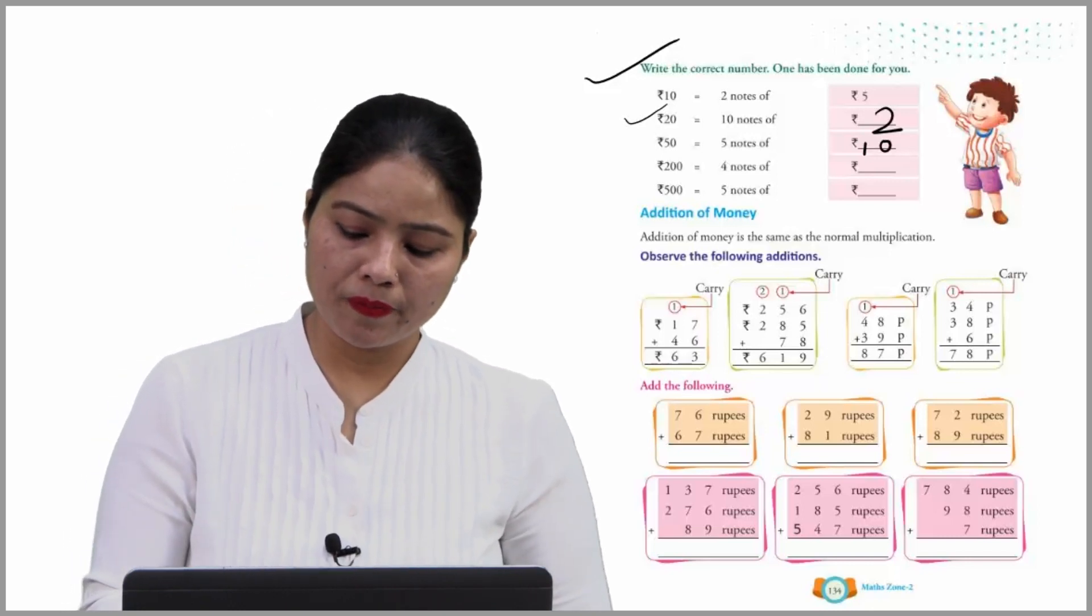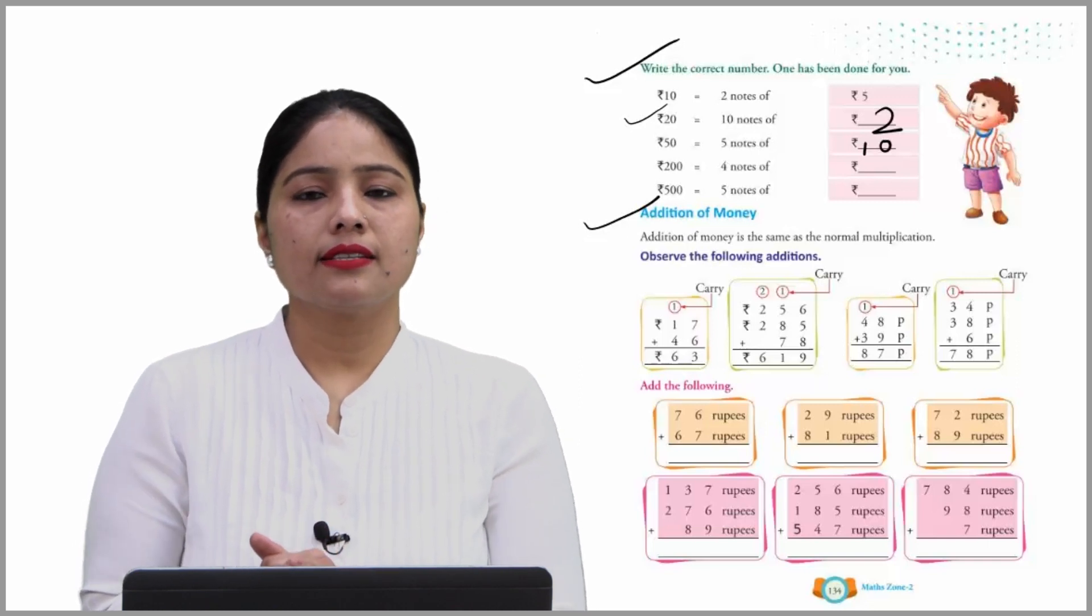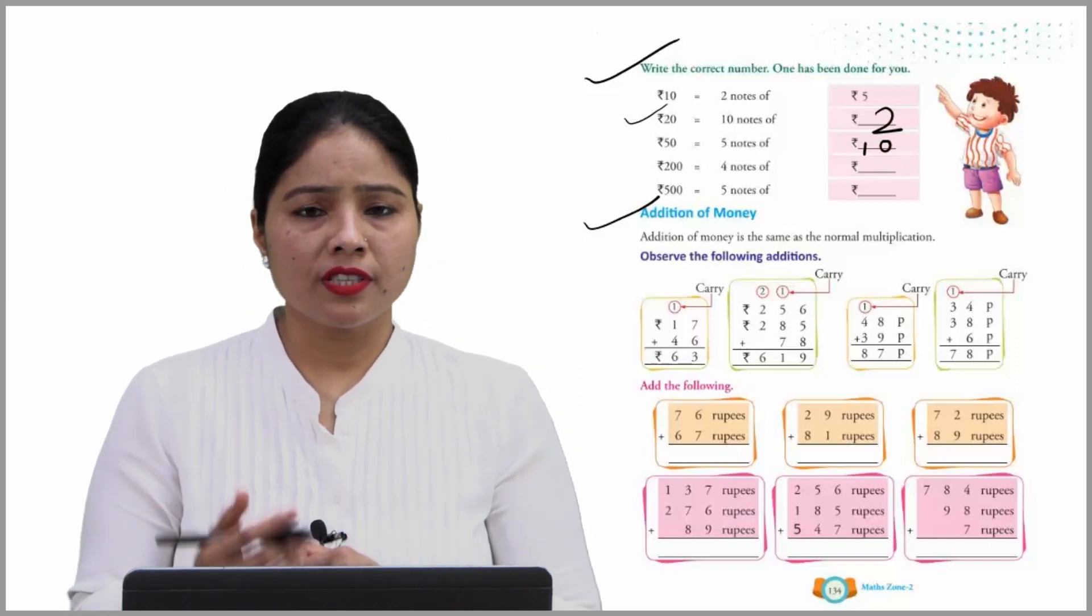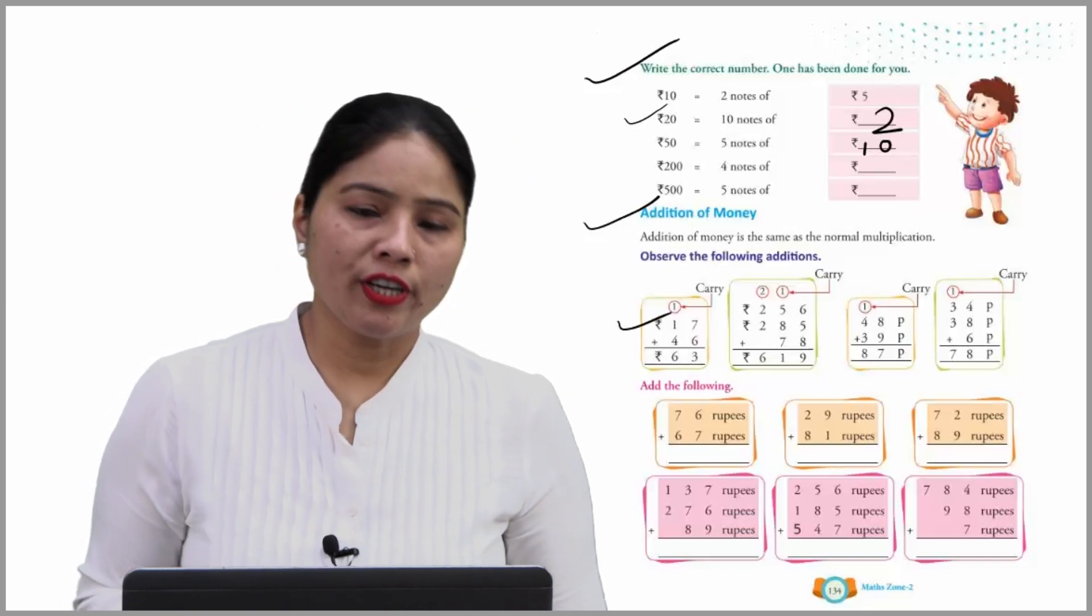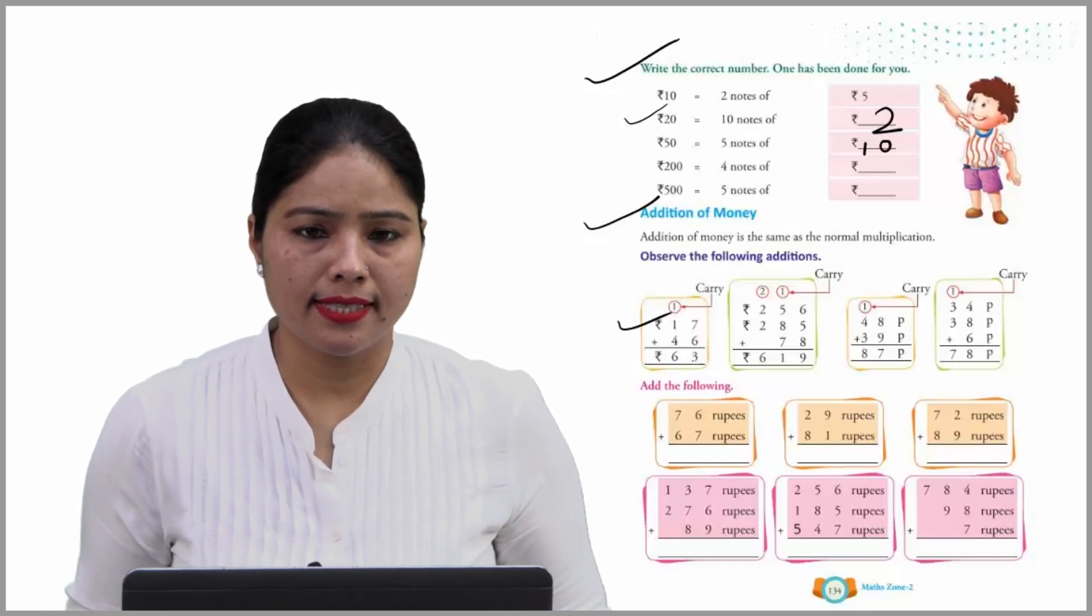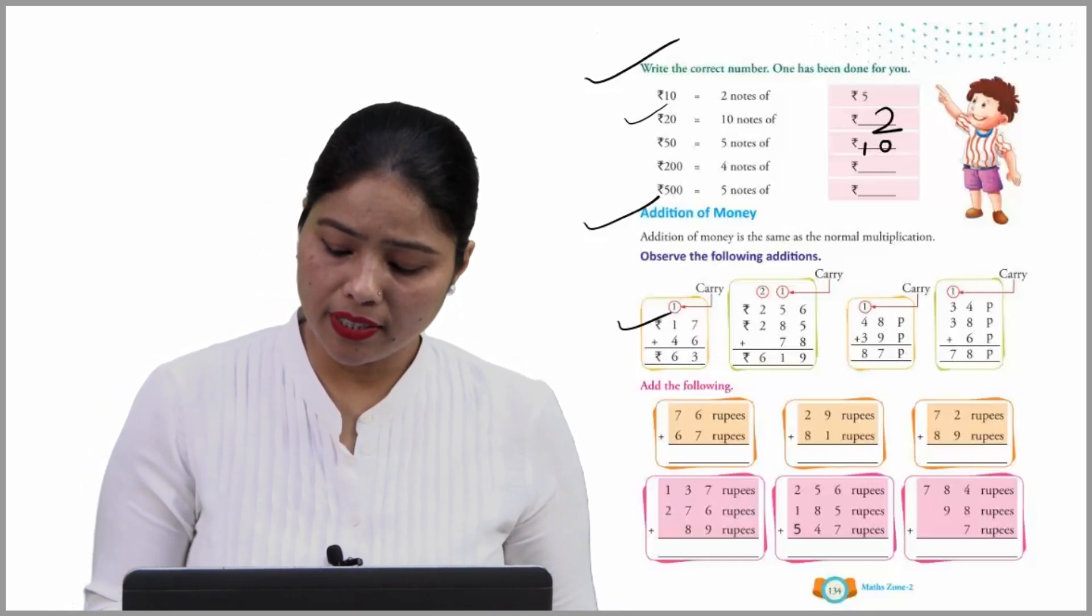Addition of money. Addition of money is the same as the normal additions. Observe the following additions like this: 17 and 46. If you add both the numbers, then you will get 63.